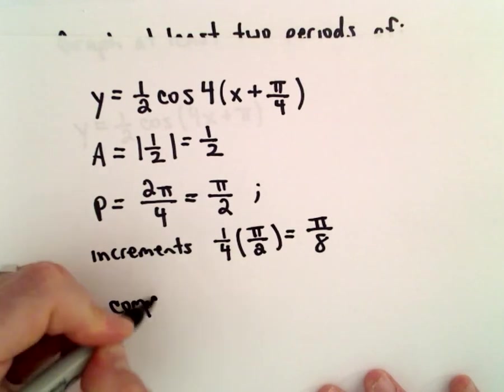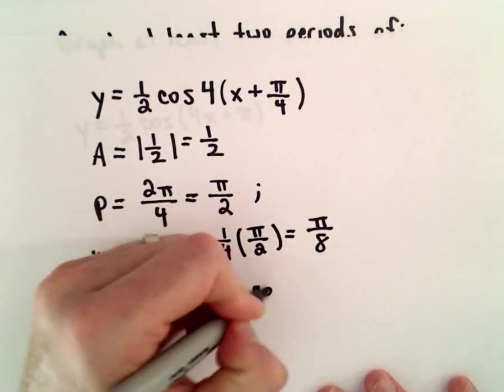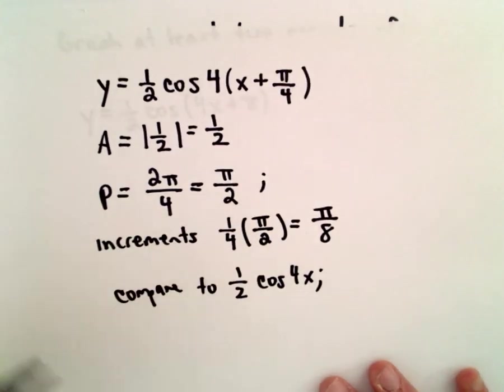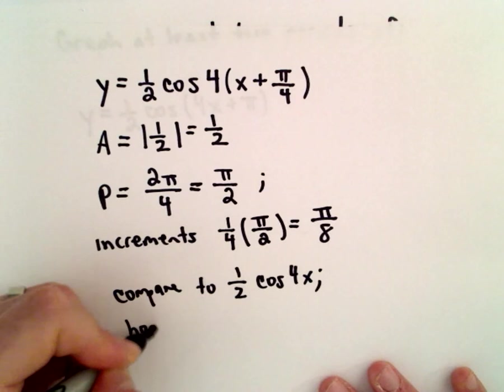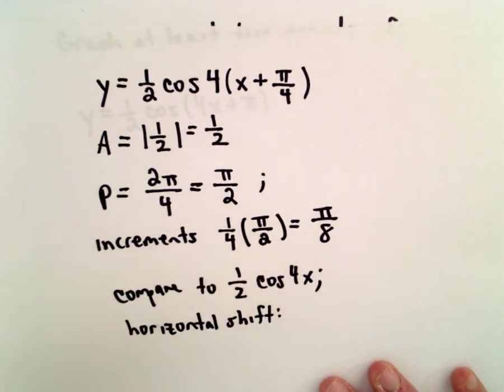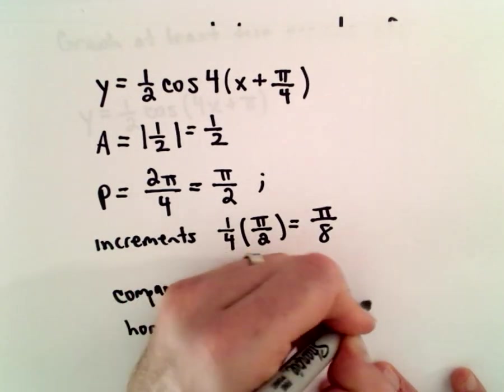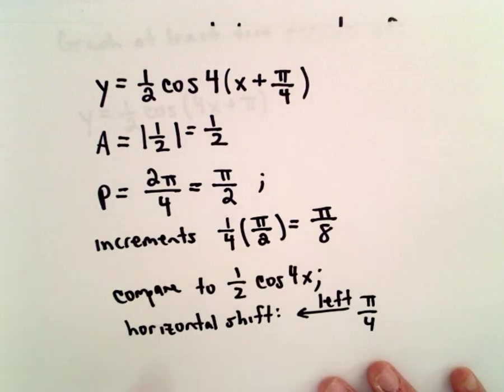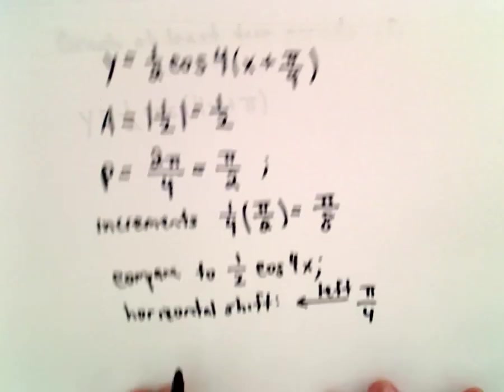And if we compare this to the graph of one-half of cosine of 4x, we're going to have a phase shift, or a horizontal shift to the left of pi over 4 units. So I see a positive pi over 4, well, it's going to shift it to the left, pi over 4 units.